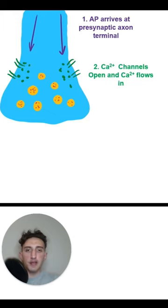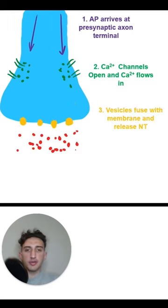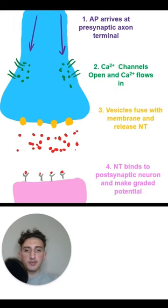When this action potential arrives at the presynaptic terminal, our calcium channels are going to open up and allow calcium to flow into the axon. Calcium entering the neuron allows the vesicles containing the neurotransmitter to fuse with the membrane and release their neurotransmitter.